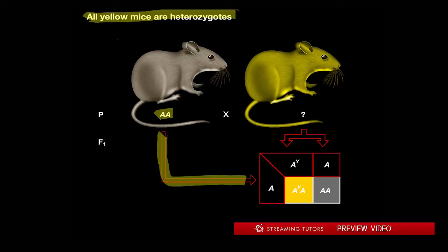saw was that you got 50% yellow and 50% agouti. We know that this parent can only contribute the big A allele, right? So what that means is the other parent would have to be contributing